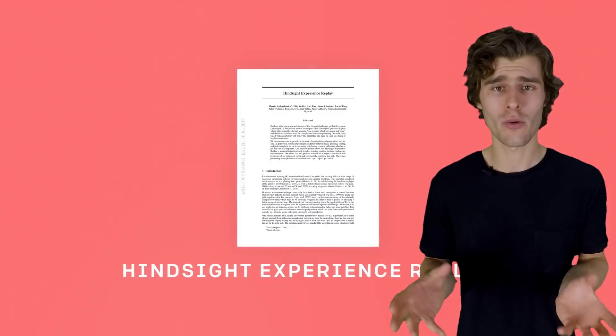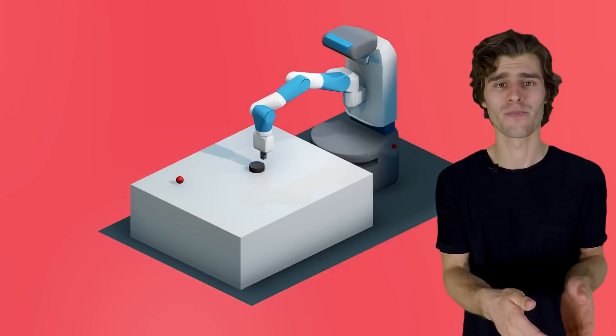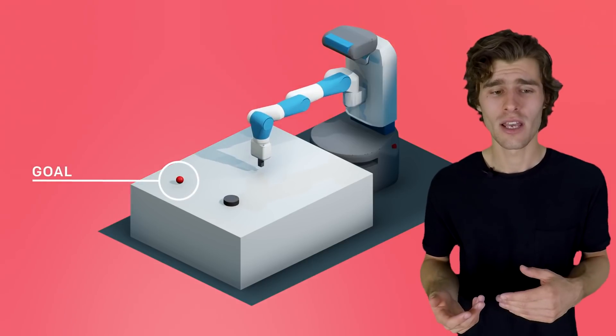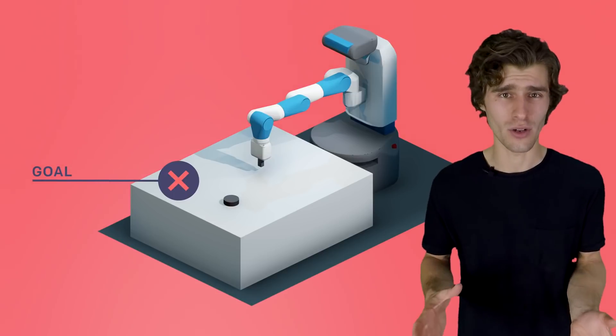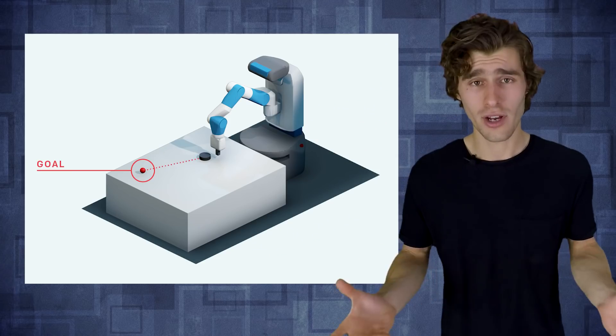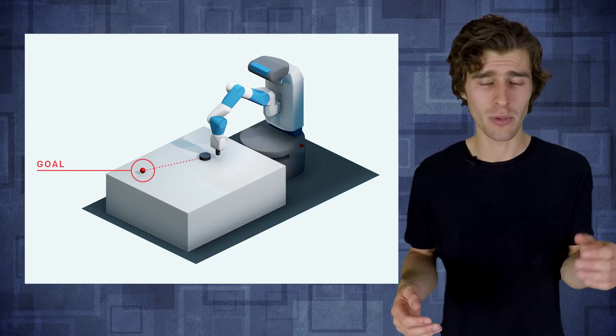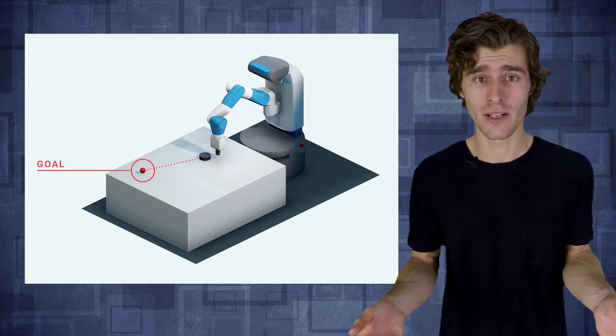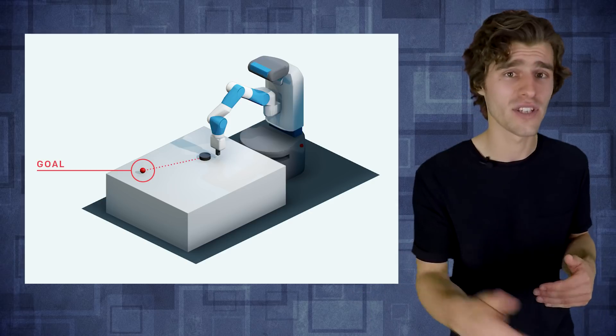So you imagine you want to train a robotic arm to push an object on a table to a specific target location. The problem again is that if you do this by random exploration, it's very, very unlikely that you're going to get a lot of rewards, and so it's going to become very difficult to train this policy. And so the general solution to do this would be to shape a dense reward, which is, for example, the distance of the object to the target location in Euclidean space, right? So that way you have a very specific dense reward for every single frame, and you can use simple gradient descent to train this.